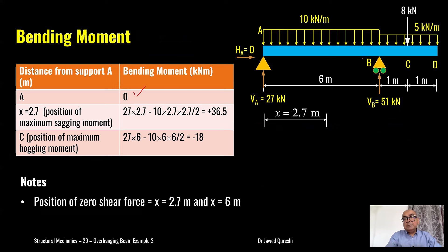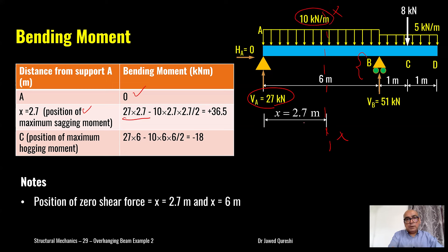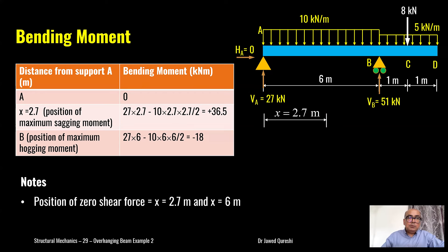At point A, bending moment is zero. At point B it is not zero — because of continuity it develops a negative bending moment. D is a free end so it also has zero bending moment. Let's work out the bending moment at 2.7 m from the left: 27 × 2.7 (reaction times distance) minus 10 × 2.7 × (2.7/2) (UDL load times its centroid distance).